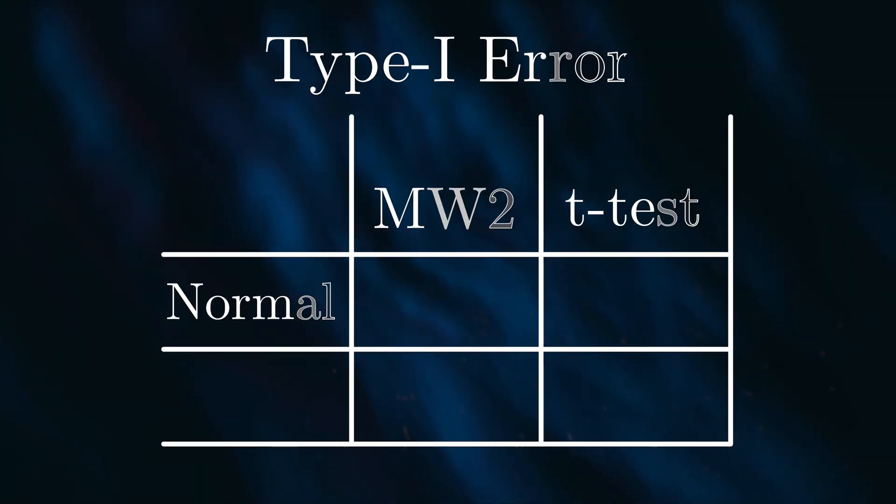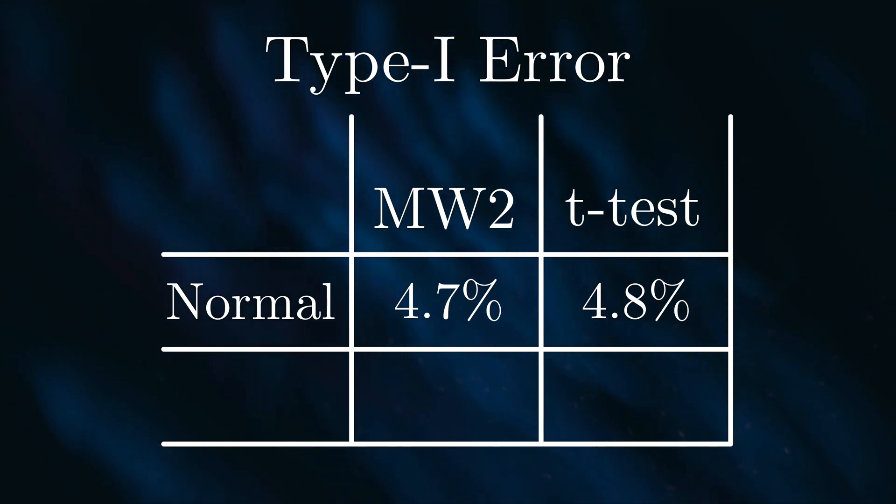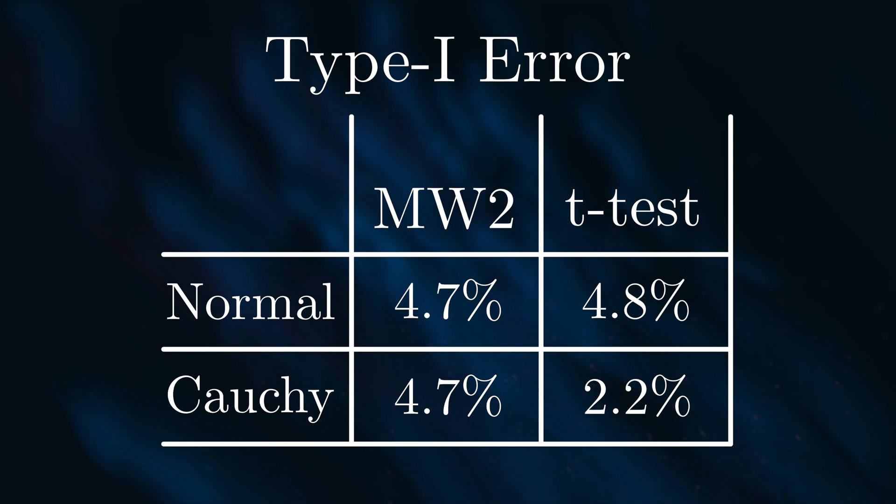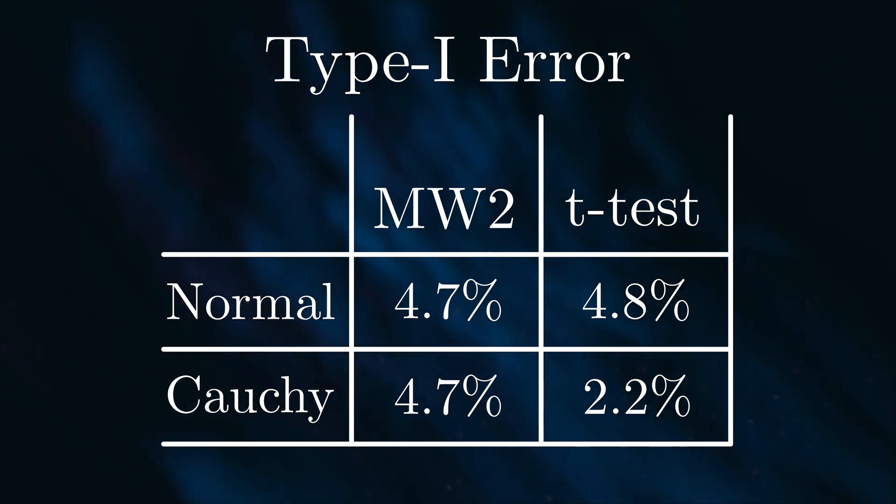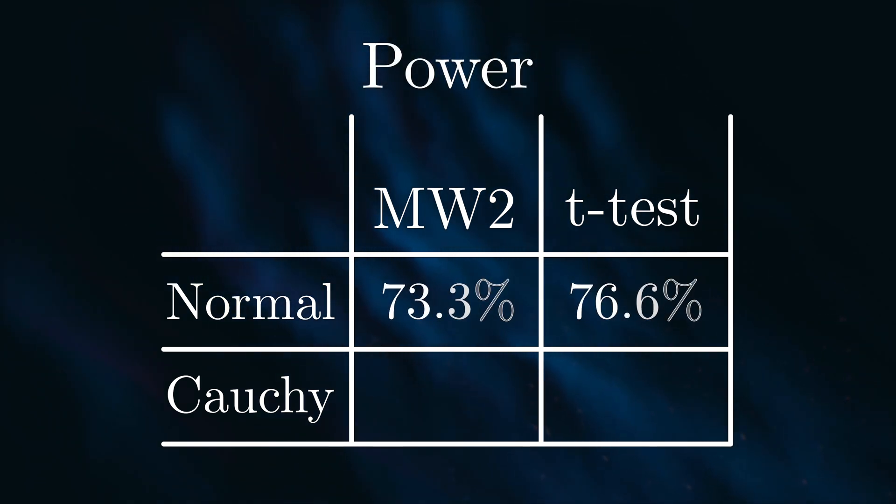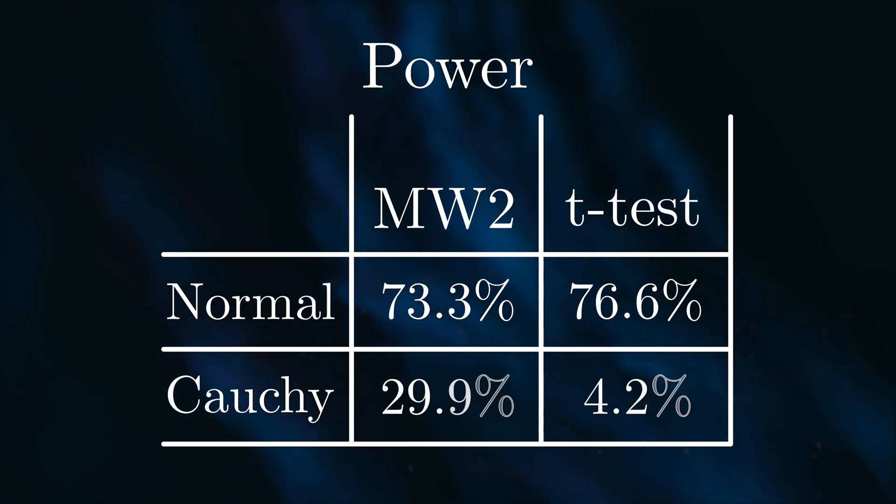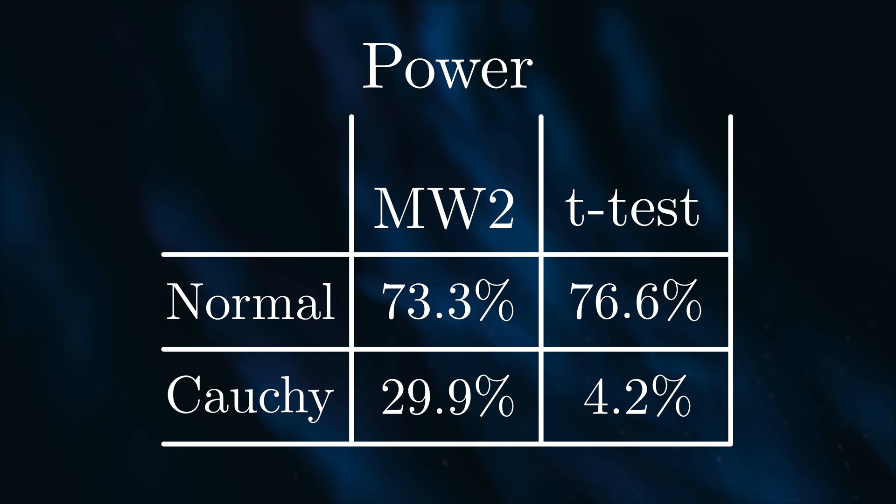Here's what happens. When the parametric assumption is true, we can see that both tests perform similarly in terms of type 1 error. Both of them are close to the theoretical 5% level. But look what happens when we use the Cauchy data. The type 1 error for the t-test is noticeably lower than the MW2 test. This isn't a good or bad thing, but it's just something to note. The most notable differences happen when we look at power. When the parametric assumption is true, the t-test is more powerful than the MW2 test. This difference might seem small, but it can play a significant role when planning an experiment. But the MW2 test is much more powerful when the assumption is violated. You can see a sharp drop in power in the t-test here.